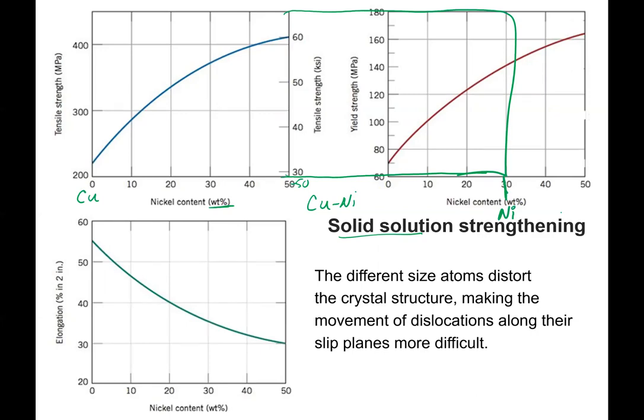All right, so I've got a copper-nickel alloy, and if I was to go ahead and measure the tensile strength of that alloy, I've got my copper tensile strength here. And then as I'm adding nickel into my copper, notice that the tensile strength is rising. So this is the solid solution strengthening process. By adding another element, you're increasing the tensile strength in that sample.